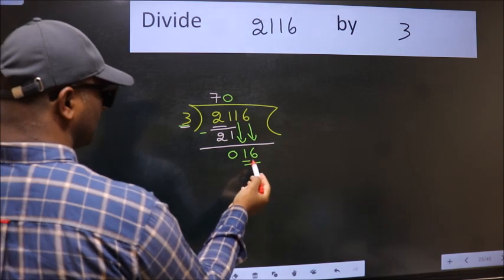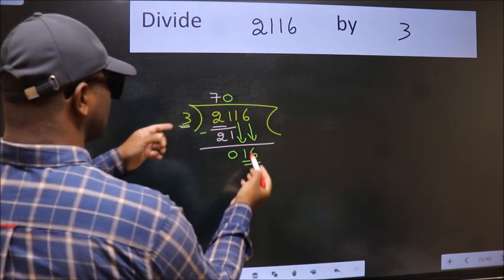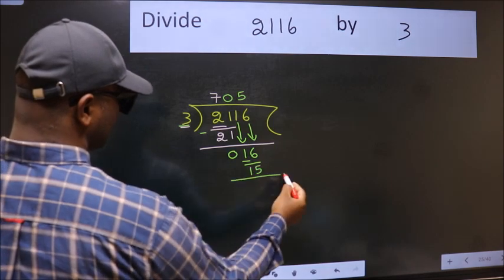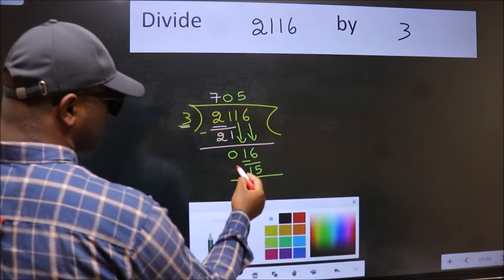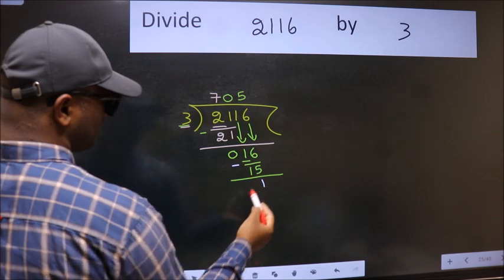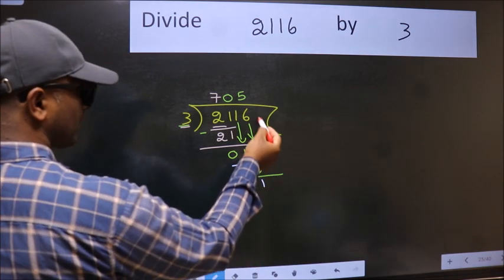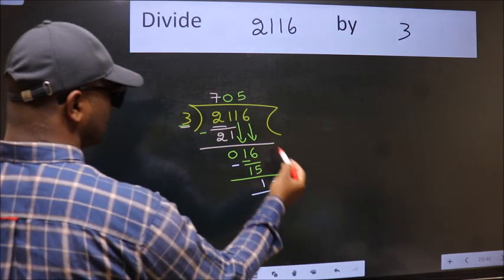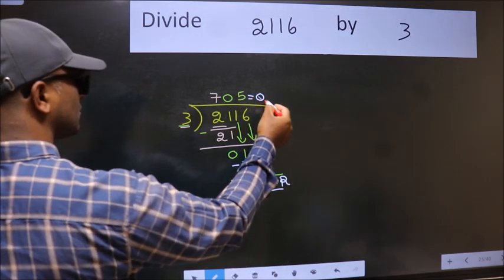So, 16. A number close to 16 in 3 table is 3 5s 15. Now we subtract. We get 1. No more numbers to bring it down, so we stop here. This is our remainder and this is our quotient.